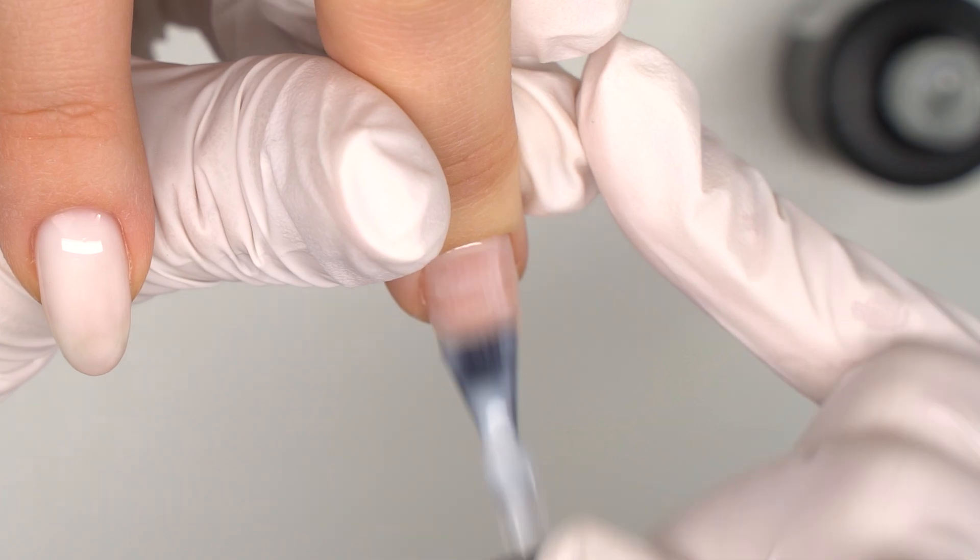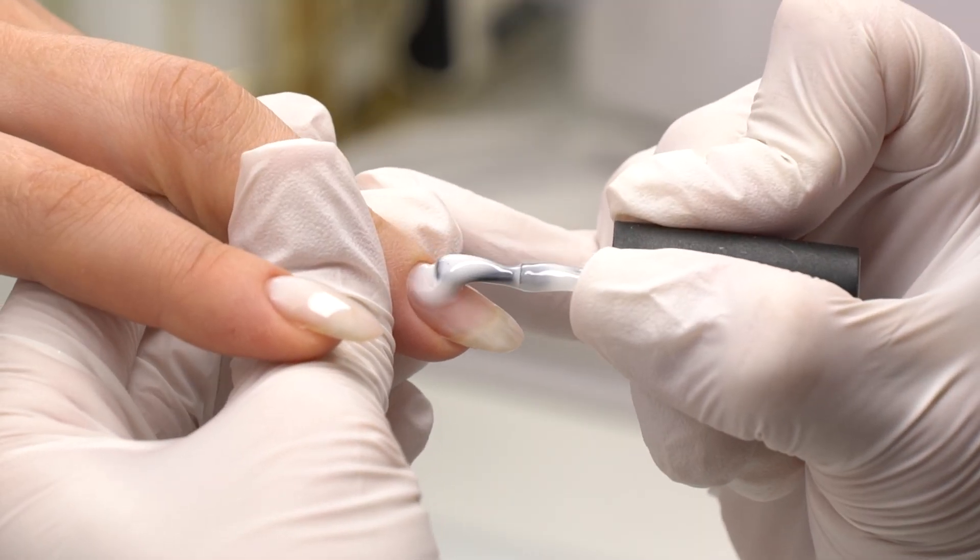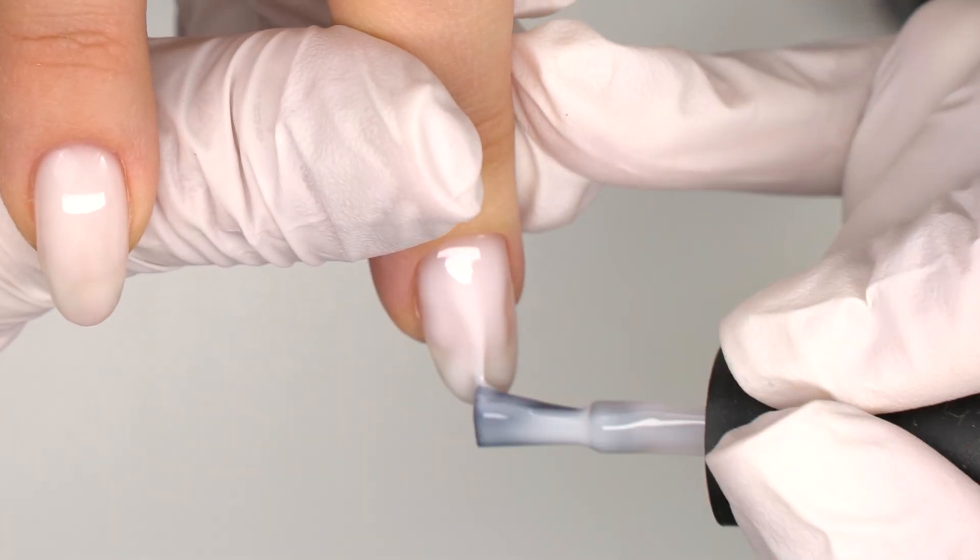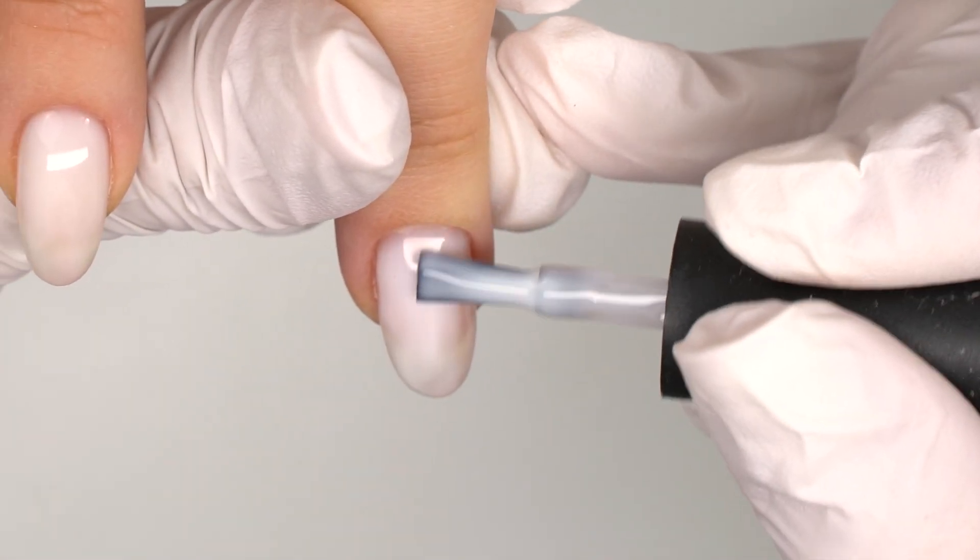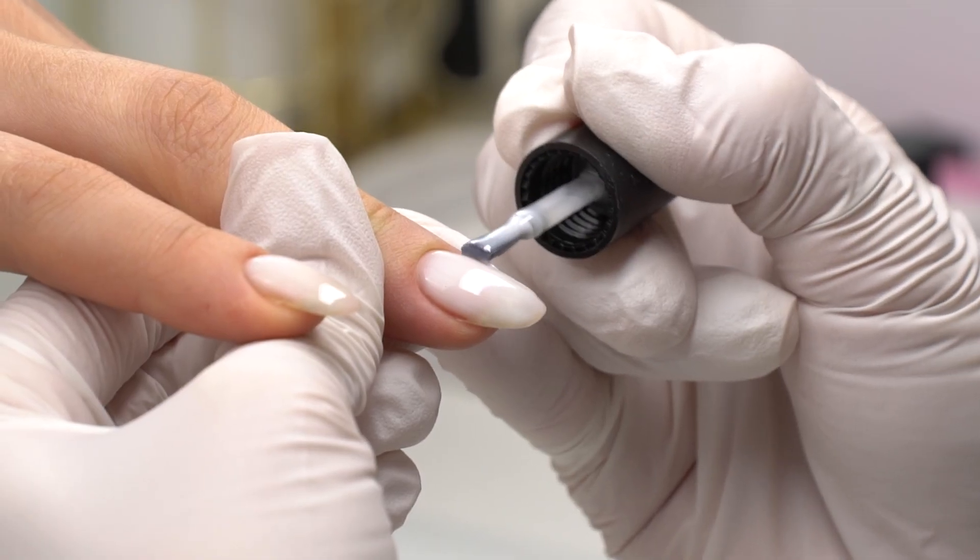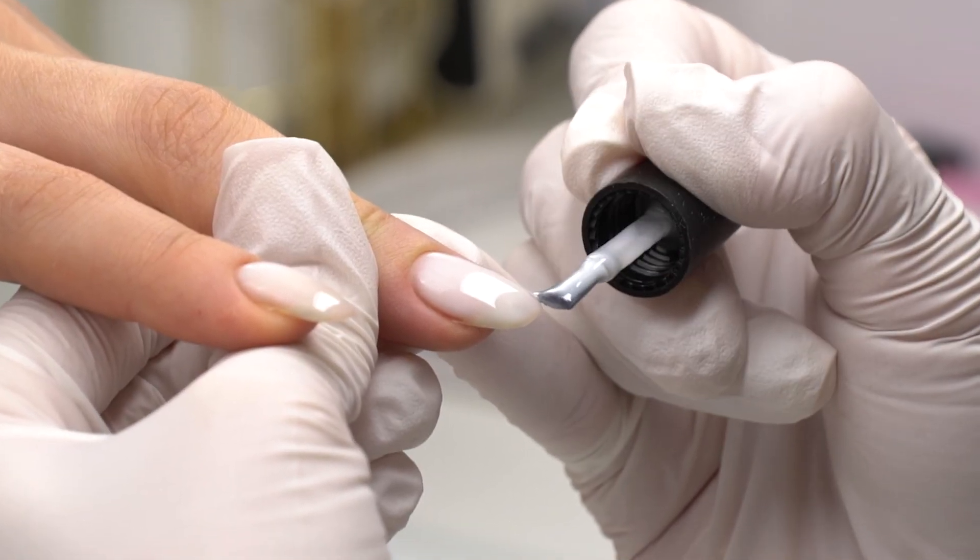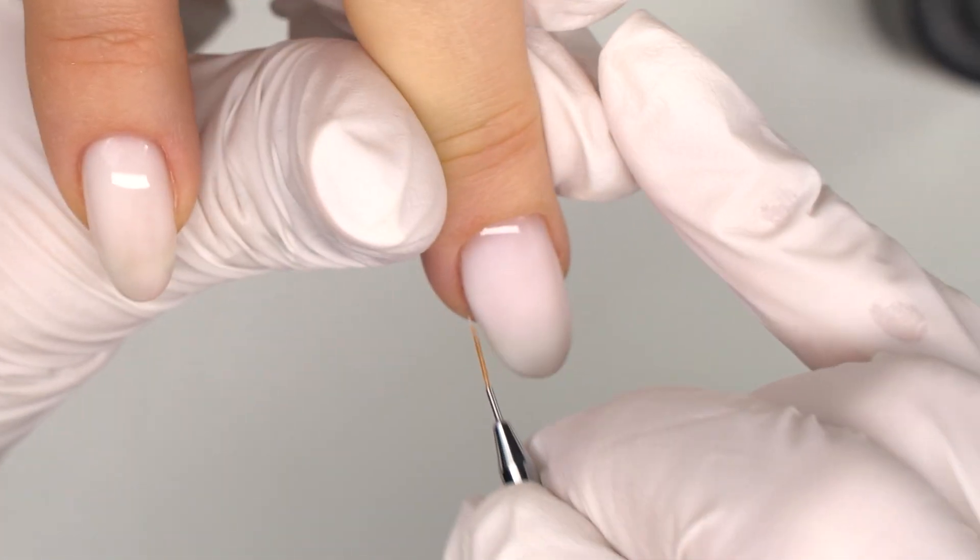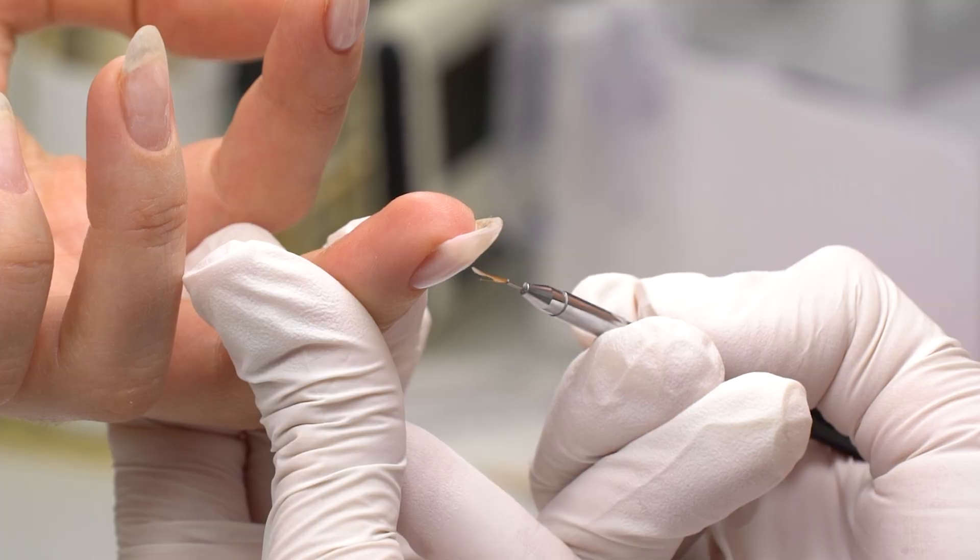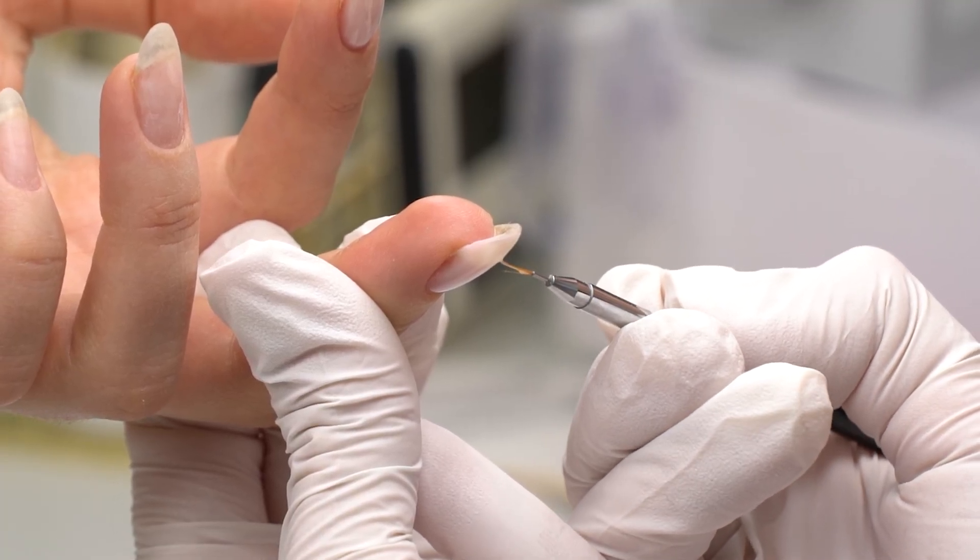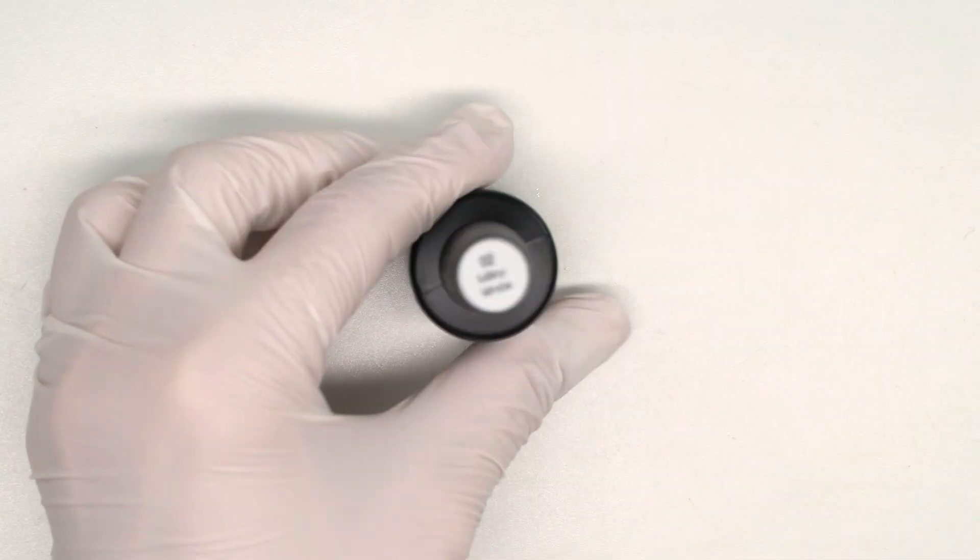The technique will depend on the natural nails, whether they are thin or hard and how well they normally last. So this part will be individual for each client. These base coats by iRisk are free of 9 most harmful chemicals, so they are not toxic. That also makes base coats superior.